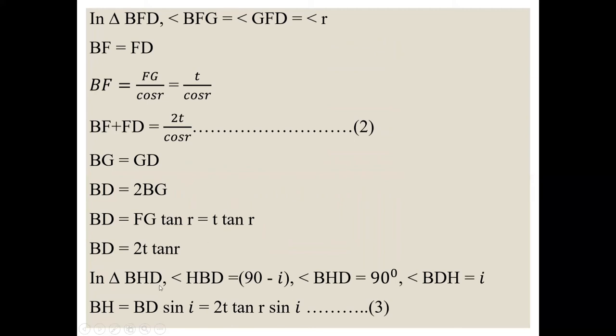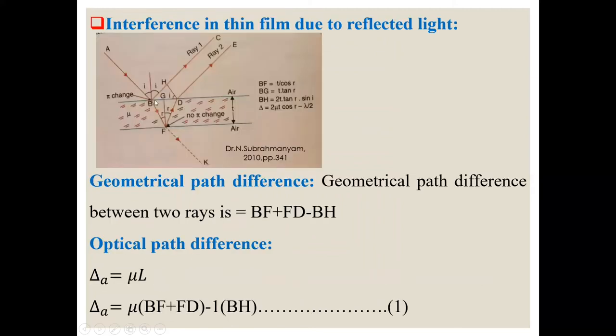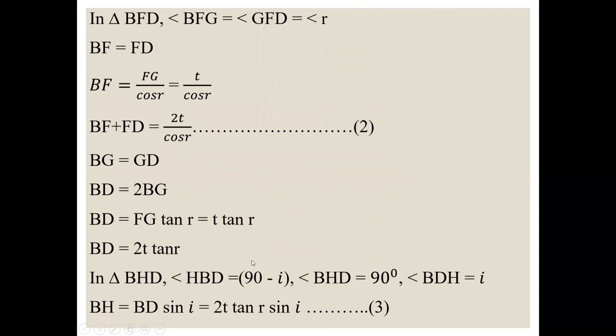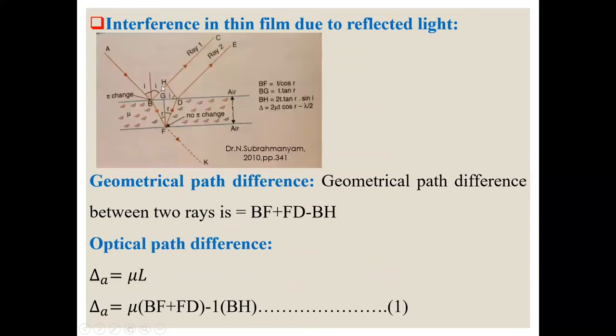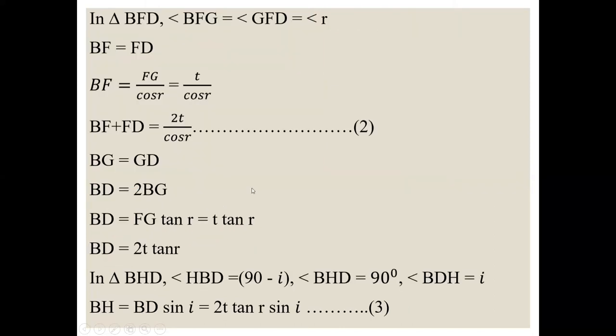In triangle BHD. See this BHD angle. This angle is 90 minus i. And BHD angle is 90. And this angle is i. So BH is equal to BD sin i.